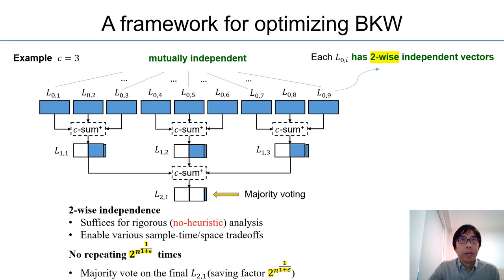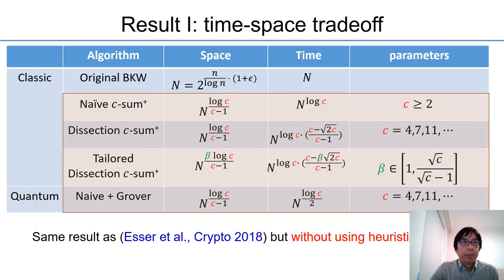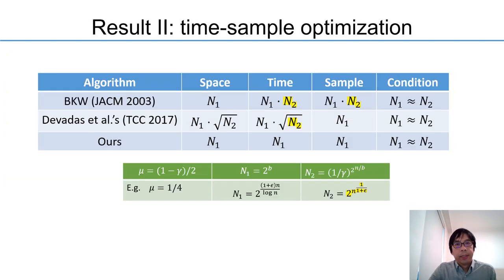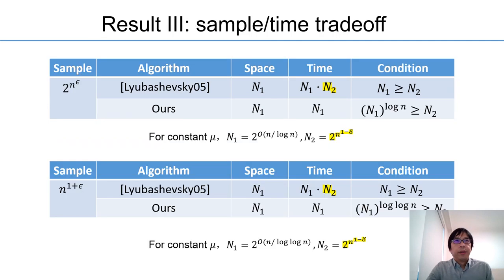Based on our tree-based algorithm, we get our first result, which is a trade-off between time and space. Here c is a tunable parameter. By changing different values for c we get different trade-offs between time and space. Compared with the previous work, we optimize the sample complexity by a sub-exponential factor which accounts for the number of reiterations in the original BKW algorithm. Further, compared with the Lyubashevsky algorithm, the time complexity is also optimized by a sub-exponential factor.